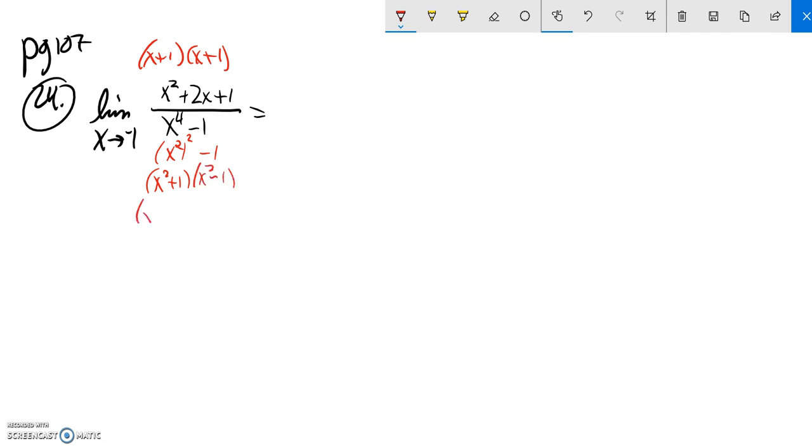And that part's prime, that x squared plus 1. But this is difference of squares again. It's kind of a nested difference of squares inside of difference of squares. So this part I can factor to x plus 1 times x minus 1. And so now that everything's factored...